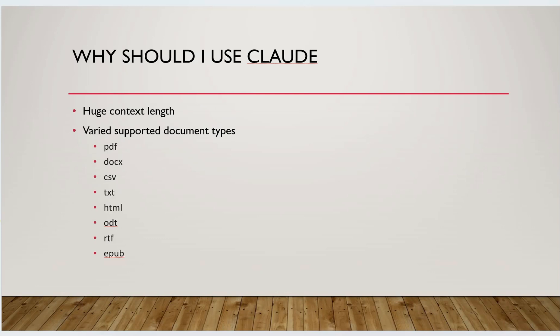So with so many LLMs around us, why should we go for Claude? What is special about this particular AI? The reason it is more popular is because of its large context length. Right now we have LLMs with around 4,000 tokens, or some with 16,000 or even 32,000, but Claude supports 100,000 tokens which is far beyond what any other LLM currently supports. It also supports various file types including PDF, CSV, and text files.